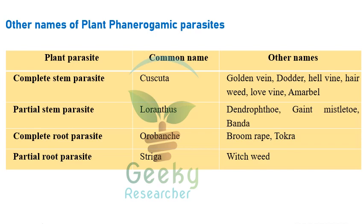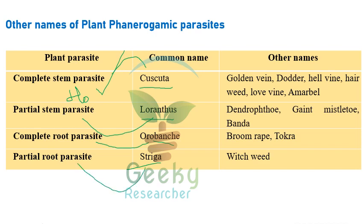Regarding parasite classification: Cascuta is a complete stem parasite (also called holoparasite). Loranthus is a partial stem parasite. Warabanki is a complete root parasite (holoroot parasite). Striga is a partial root parasite. Questions will ask: Striga is an example of which type - partial root parasite, complete root parasite, or stem parasite?